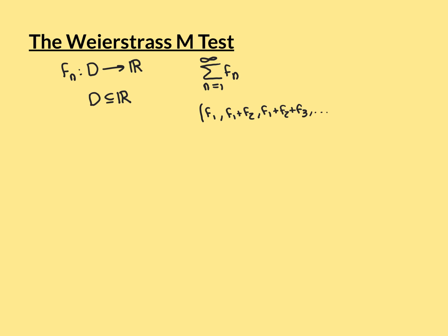Let's say we have a sequence of functions that we'll call fn. They're all defined on some domain which we'll call D, which is some subset of the real line, and they're all real-valued functions. We can then consider the series of functions, which is the sum from n equals 1 to infinity of these functions, and ask: does this series of functions converge?